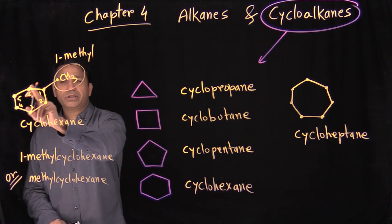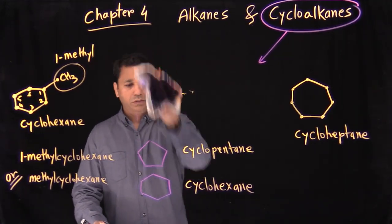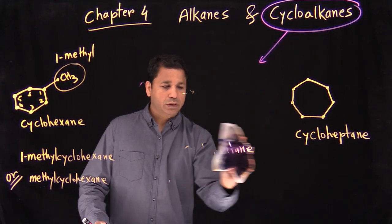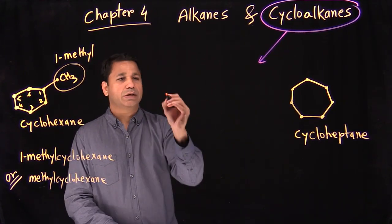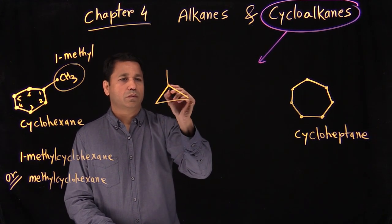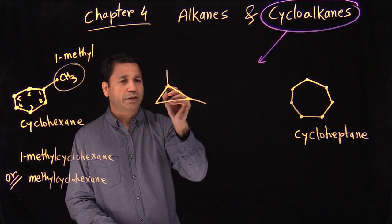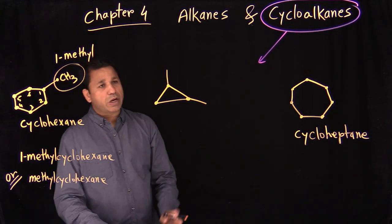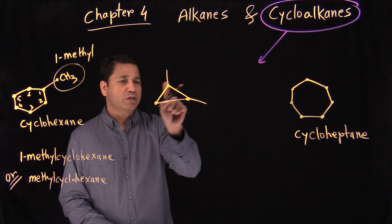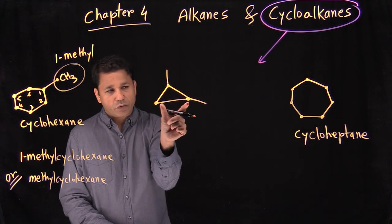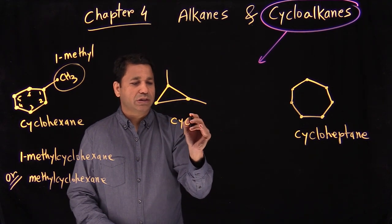The rules are still the same — we just have to make sure we're dealing with a ring now. Let's try another example. We have one, two, three carbons in the ring and the chain has only one carbon. The ring is bigger with three carbons, so the parent is cyclopropane.